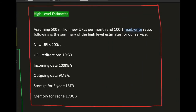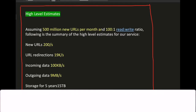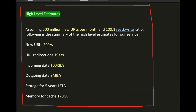In summary, the high-level estimates are: 500 million URLs per month, 100:1 read-write ratio, 200 new URLs per second, 19,000 redirections per second, incoming data at 100 KB/s, outgoing at 9 Mbps. An AWS t3 medium instance should handle this requirement, with a multi-cluster setup to avoid single point of failure. Storage for five years is 15 TB — RDBMS is fine. Cache is 170 GB — Redis is a good option.